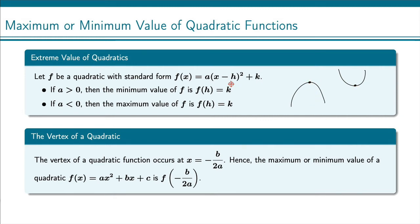The maximum or minimum occurs at the vertex, and that depends on whether the parabola is opening downward or upward. That comes down to the sign of 'a', the leading coefficient. If a is positive, we know it's opening upward, and so we have a minimum point. The minimum value of the function is f(h) = k — it's that k value, the y-value of the vertex — and it occurs when x equals h, the x-value of the vertex.